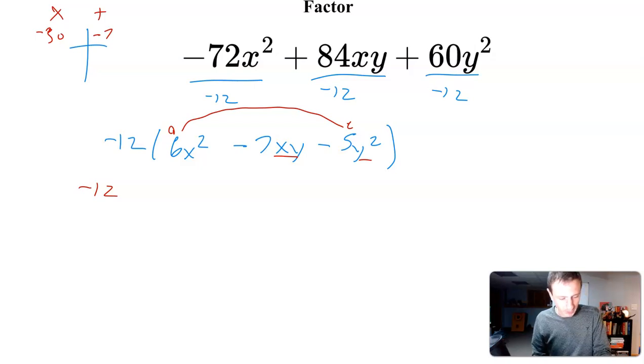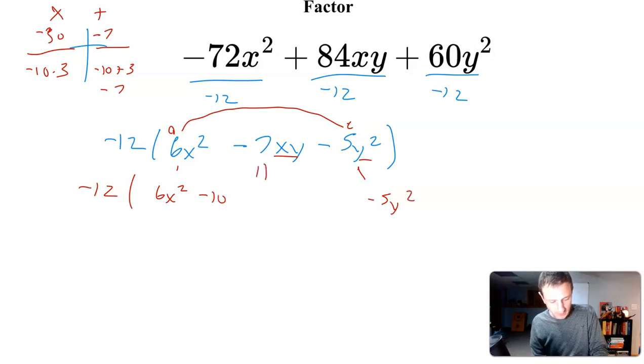I like to do the AC method where I'm multiplying two numbers that multiply to -30 and add up to -7. That would be -10 and 3. -10 times 3 is -30, -10 plus 3 is -7. Since I got the numbers, here's how we're going to do this. I'm going to bring down 6x², bring down -5y², and then this is -10xy + 3xy. I'm replacing that middle term with my two factors that work, -10 and 3.